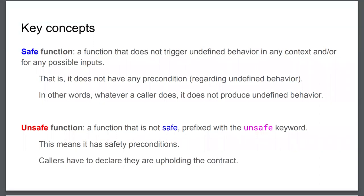Another way to put it is in terms of contracts or preconditions. We talk about the safety contract. A safe function does not have a safety contract — it's promising that there is no safety contract to uphold, so the caller does not have to do anything in particular; it can pass whatever values it wants and the function will not trigger undefined behavior. Unsafe functions are the opposite: they require the caller to pass correct values.